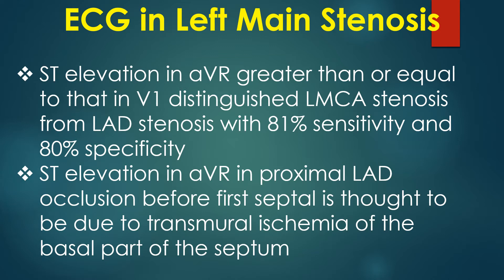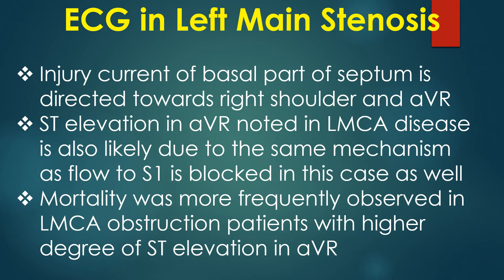ST segment elevation in AVR in proximal left anterior descending artery occlusion before the first septal is thought to be due to transmural ischemia of the basal part of the septum. The injury current of the basal part of the septum is directed towards the right shoulder and AVR. ST elevation in AVR noted in left main disease is also likely due to the same mechanism, as flow to the first septal is blocked in this case as well.